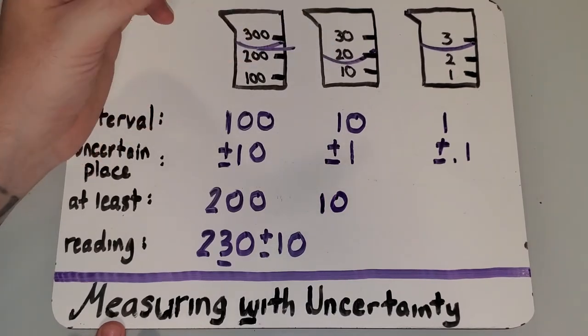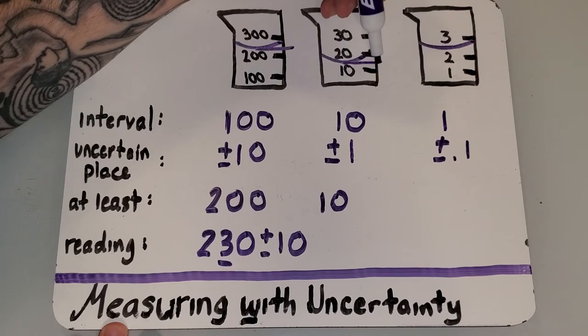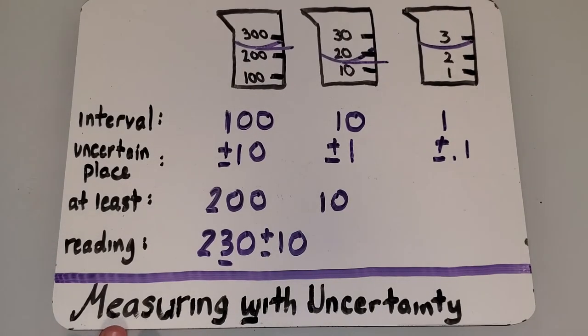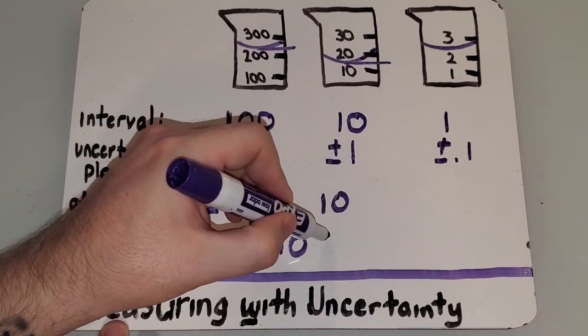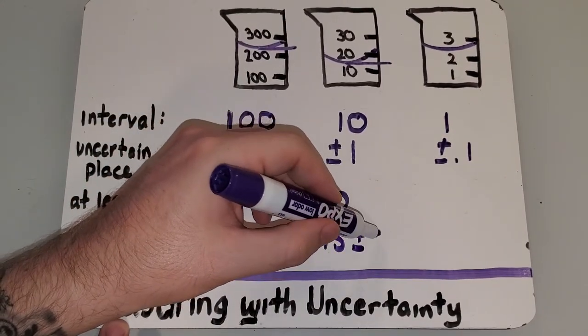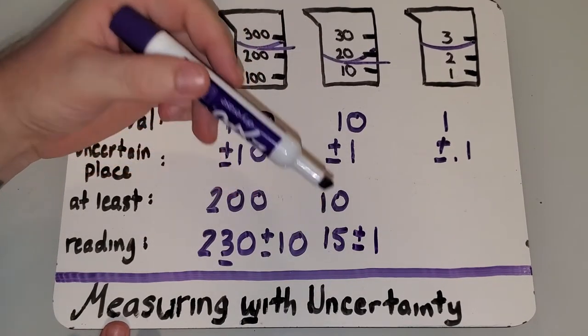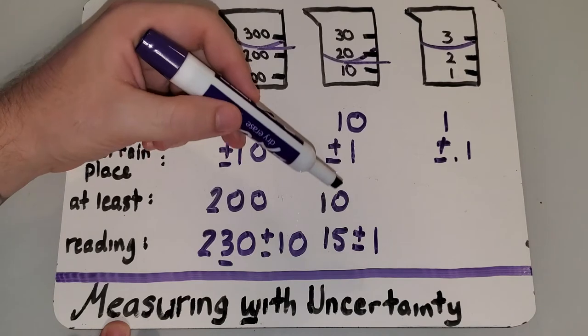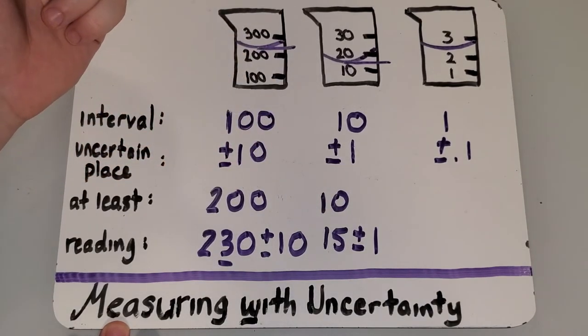And now we get to estimate. We got to look. Where do we think it is? To me, it looks like it's about halfway between 10 and 20. So, it's 15 plus or minus 1. Maybe it's actually 14. Maybe it's actually 16. That's the point with uncertainty. There's going to be some estimation involved.